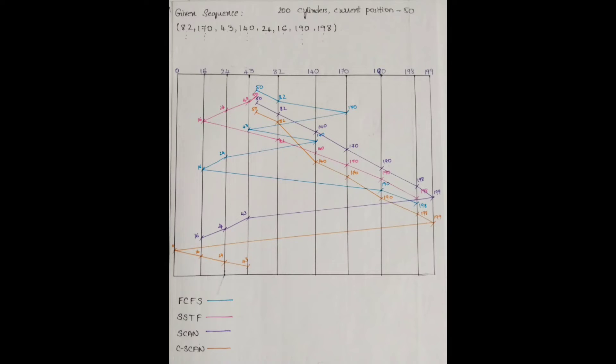Now we have 4 disk scheduling algorithms. I will show you an example. The disk moment is 200 and the current position is 50. I will show you the different colors of the disk movement. Check every algorithm seek time in the comment section. Thanks for watching.